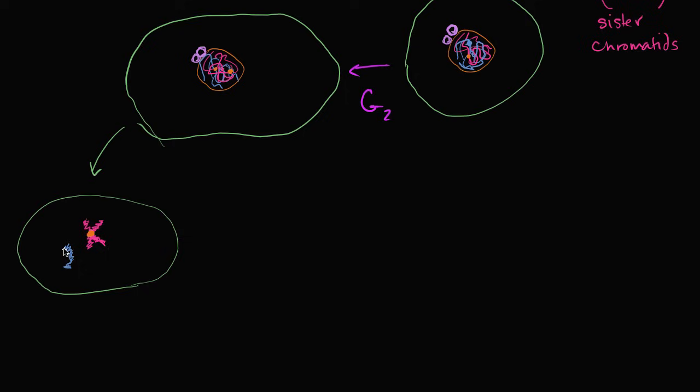Even though before replication, it was still considered, the magenta stuff was still considered to be one chromosome. And we can draw the blue chromosome. Once again, it's now in the condensed form. That's one sister chromatid right over there. That's another sister chromatid. They are connected at the centromere. So they're condensing now as we enter into mitosis.